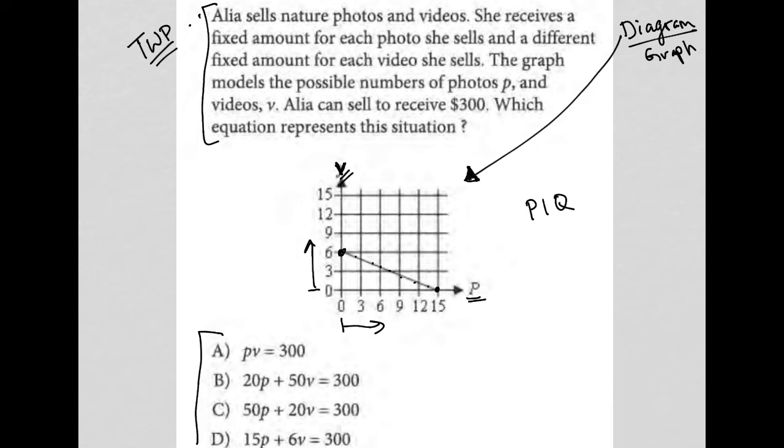I've already pointed out the information that I can use. For instance, this point right here tells me that when V, number of videos, equals 6, then P should equal 0. And then we should get 300. Somehow P and V having these values should end up leading us to this $300 that she makes.